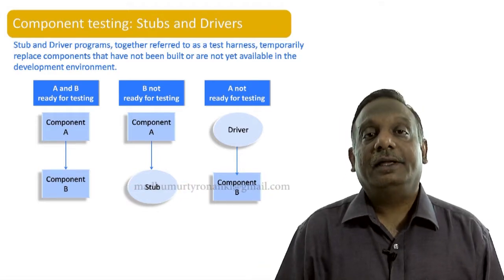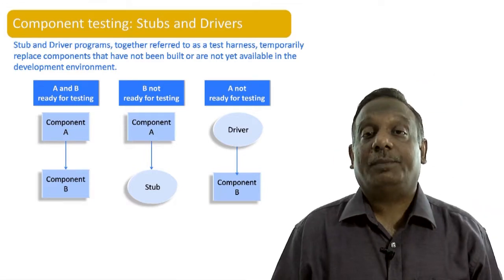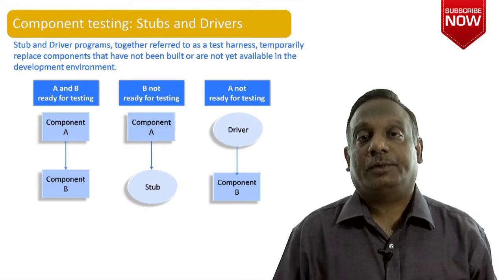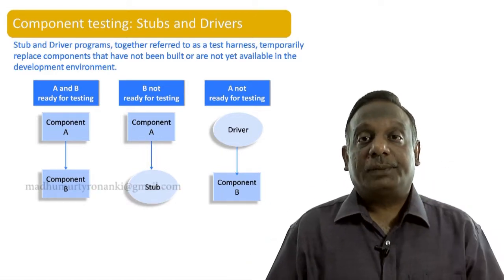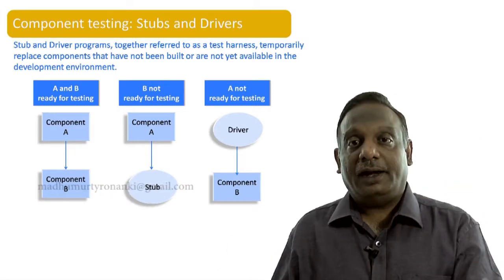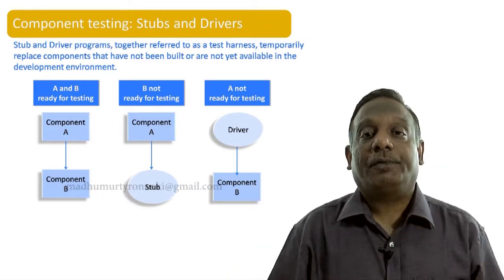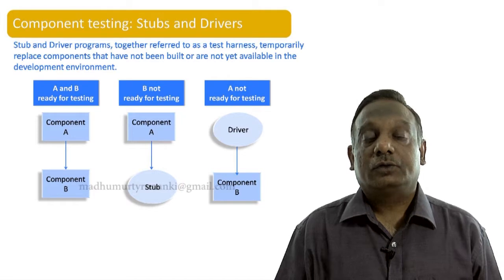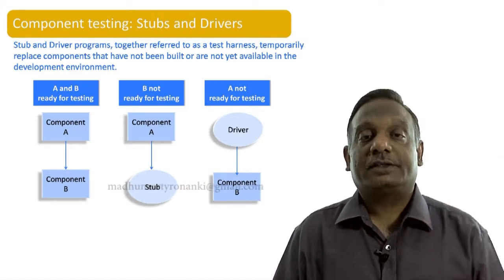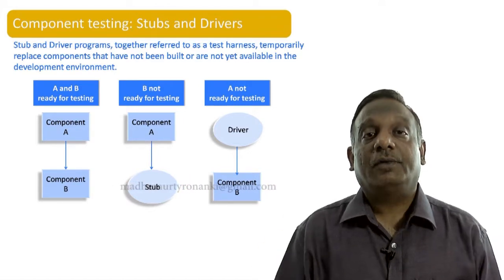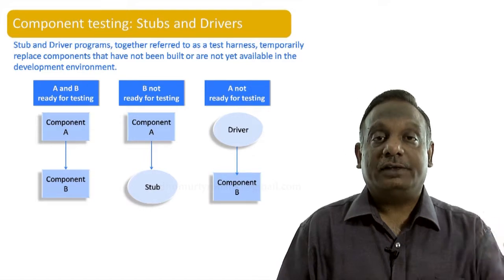Now consider the opposite: component B is ready and you want to do unit level testing of it, but component B is being driven by a higher-level program — component A — which is not ready yet. To complete unit level testing of component B, you must develop a script that replaces the behavior of component A — the way A calls and controls the flow of component B. These dummy programs that sit on top of the component being tested are called drivers.